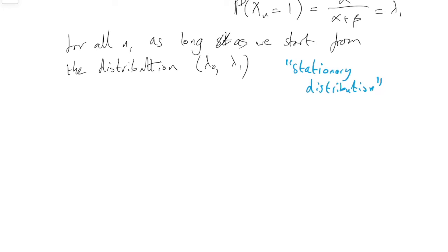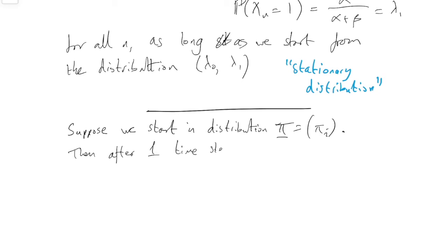So, what's the kind of general theorem here? So, suppose we start in a distribution, well let's call it pi now. And this is for some general Markov chain. So, pi equals pi i, where i goes through whatever the state space is. And where are we after one time step?